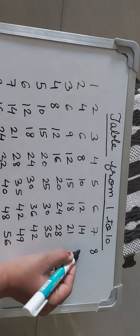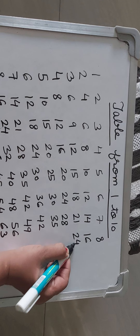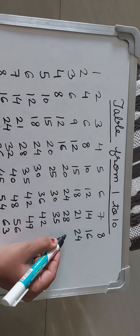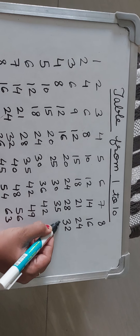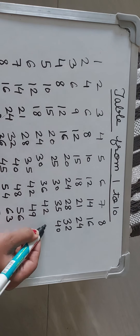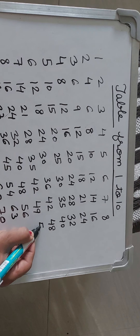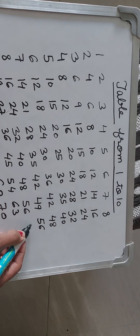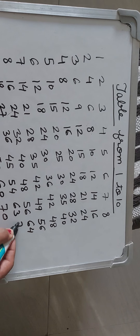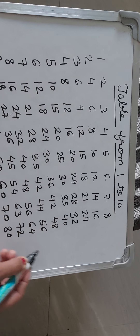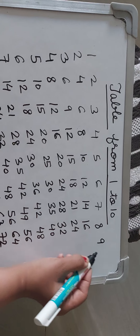Table of 8. 8 1s are 8, 8 2s are 16, 8 3s are 24, 8 4s are 32, 8 5s are 40, 8 6s are 48, 8 7s are 56, 8 8s are 64, 8 9s are 72, and 8 10s are 80.